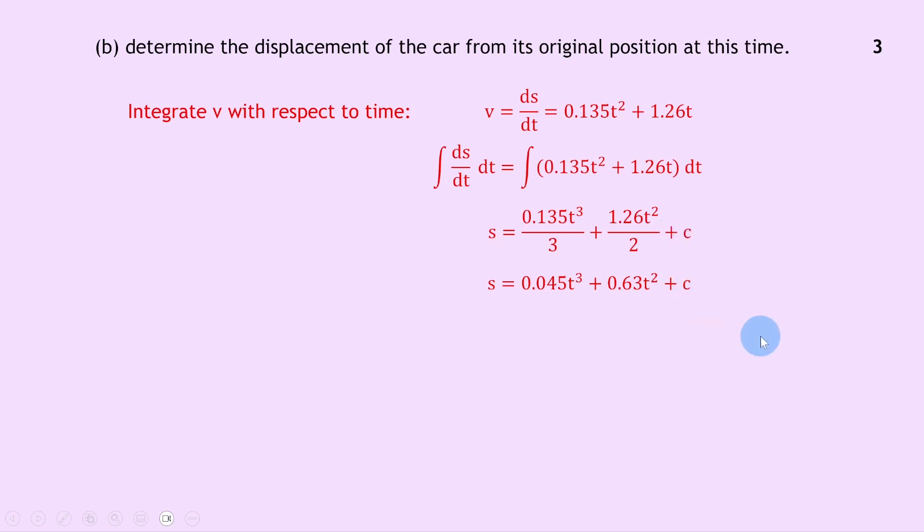As always we want to get rid of this constant, so we need to consider the initial conditions, which is what happens at time t equals 0. We can say at t equals 0, the displacement s equals 0, in other words the car hasn't moved yet. So if we sub in t equals 0 as well as s equals 0, that means we get c equals 0. So we can rewrite this without the constant. We have s equals 0.045t cubed plus 0.63t squared.